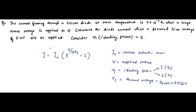Since a forward bias voltage is given, it will be a forward current. The applied voltage is equal to 0.4 volt. We have the ideality factor, we have the thermal voltage, we have the applied voltage, but we don't have the reverse saturation current. If you pay attention to the first line of the question — the current flowing through the silicon diode at room temperature when a large reverse voltage is applied — the basic definition of reverse saturation current is the current which flows through the diode when a large reverse bias voltage is applied.